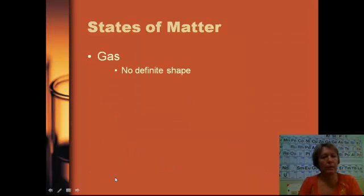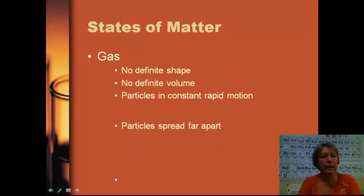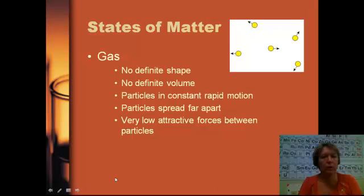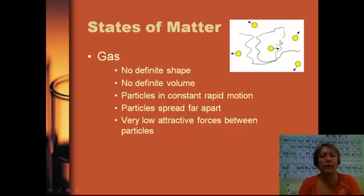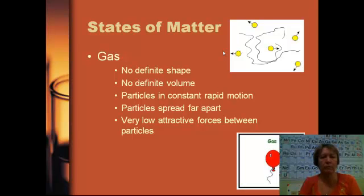The last state of matter is the gas state. Gases have no definite shape and no definite volume. In a particle diagram of a gas, the particles are spread far apart with a lot of empty space, and these particles are in constant random motion — the arrows show they're moving constantly. Because they're so far apart, there are very low attractive forces between them. An example of a gas: when we blow up a balloon, we contain the air inside — that's a gas.